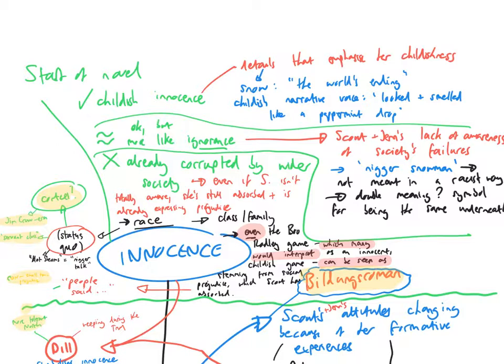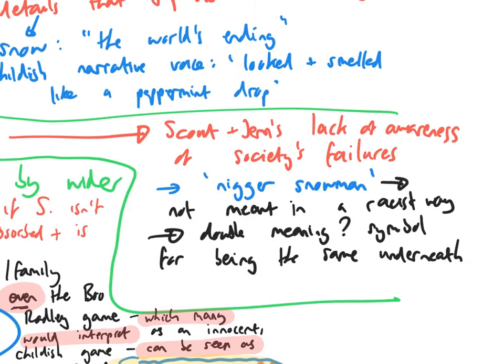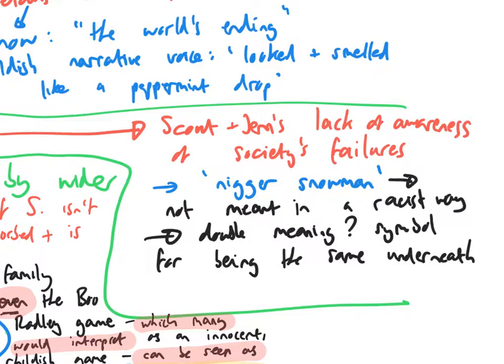However, although Scout's youth is emphasized at the start, this isn't necessarily innocent per se. It's more like ignorance. A point to illustrate this: Scout and Jem's awareness or lack of awareness of the failures of society. So for example Toby pointed out she mentions the quote nigger snowman and she doesn't mean that in a racist way. So she's not aware of society's failings. She just uses this term fairly innocently.